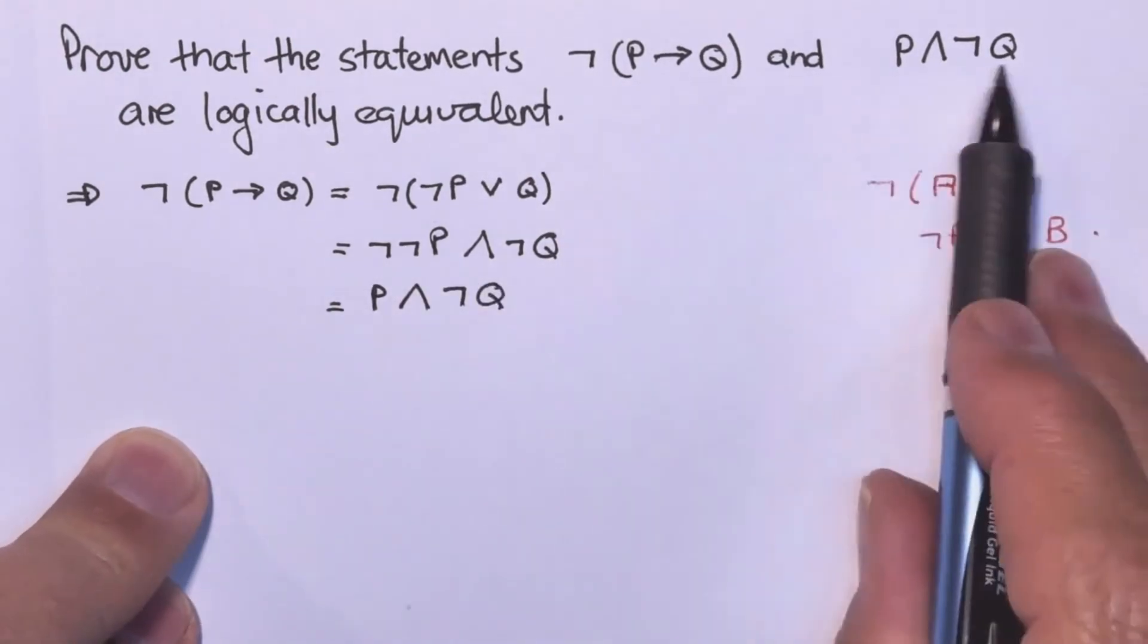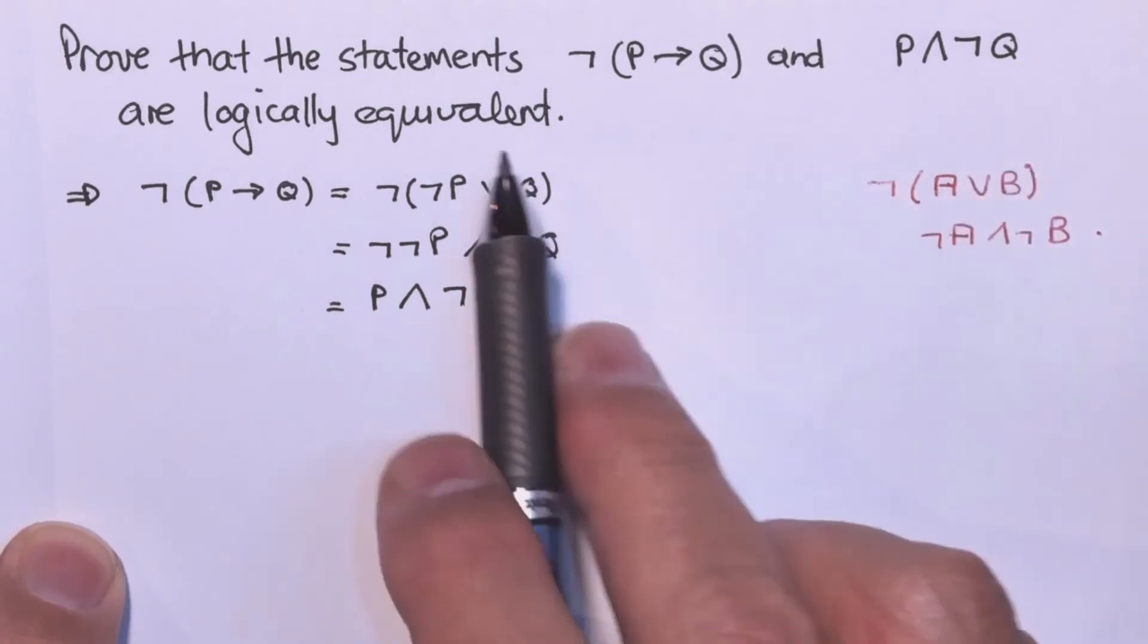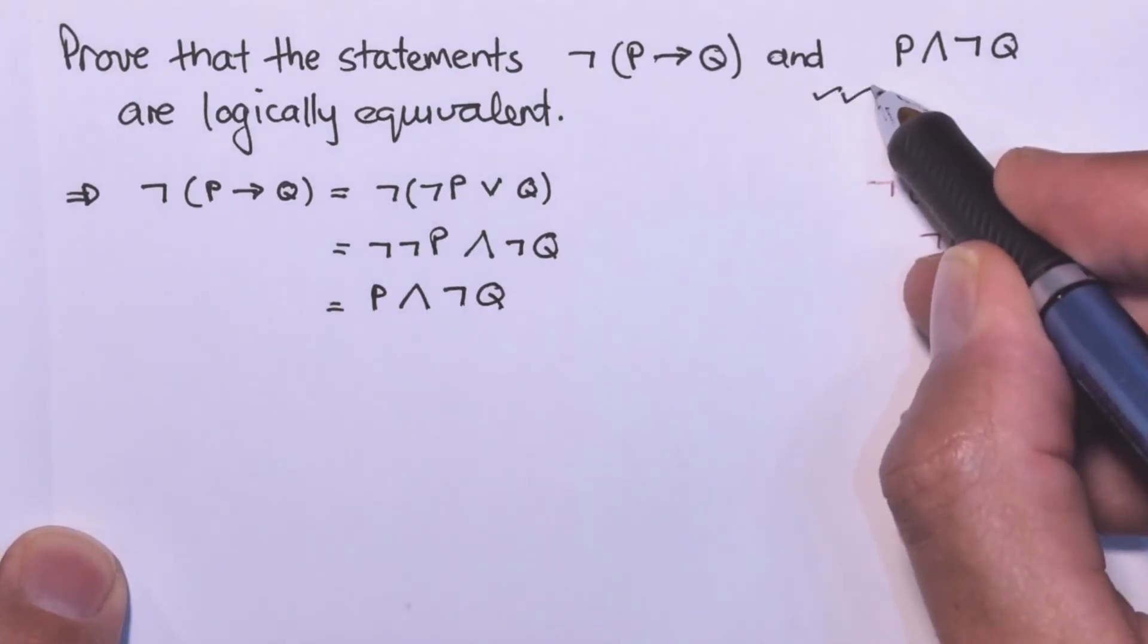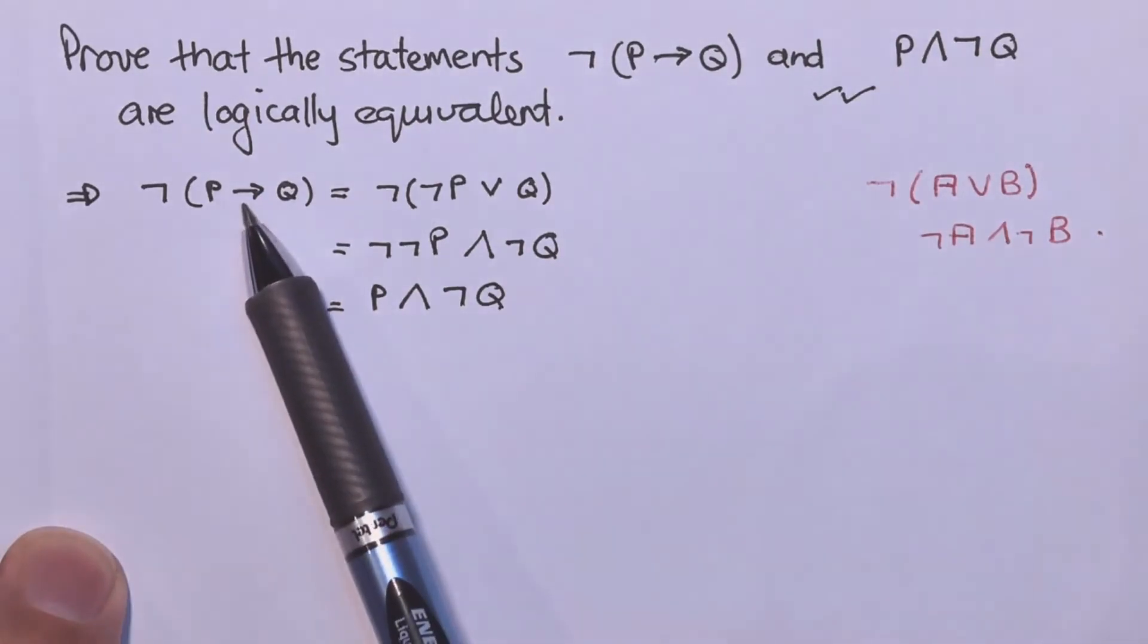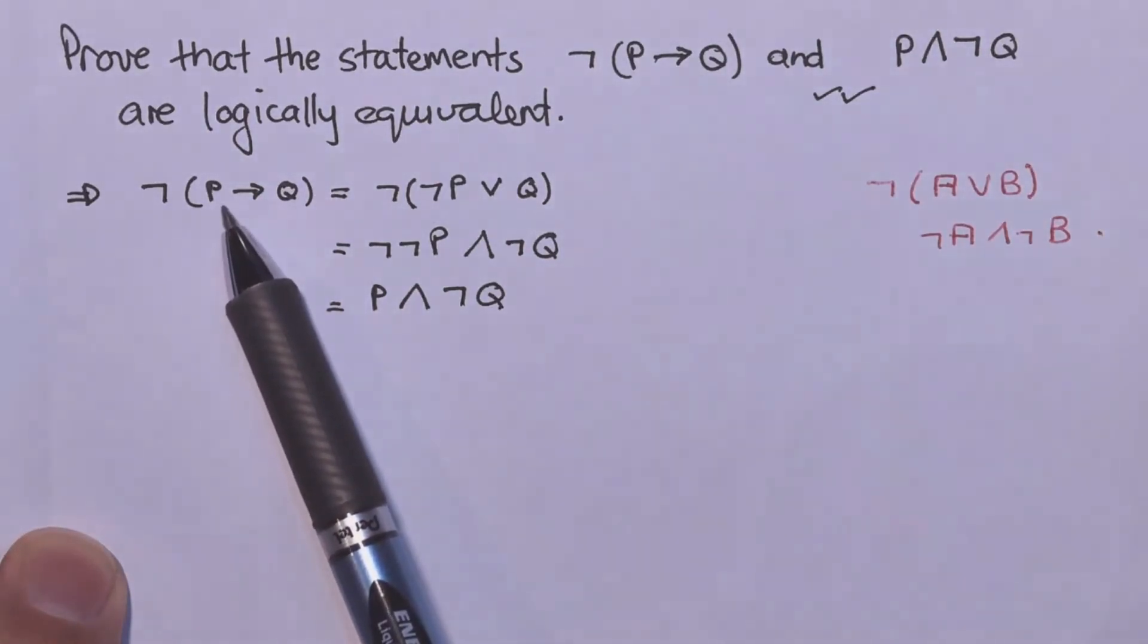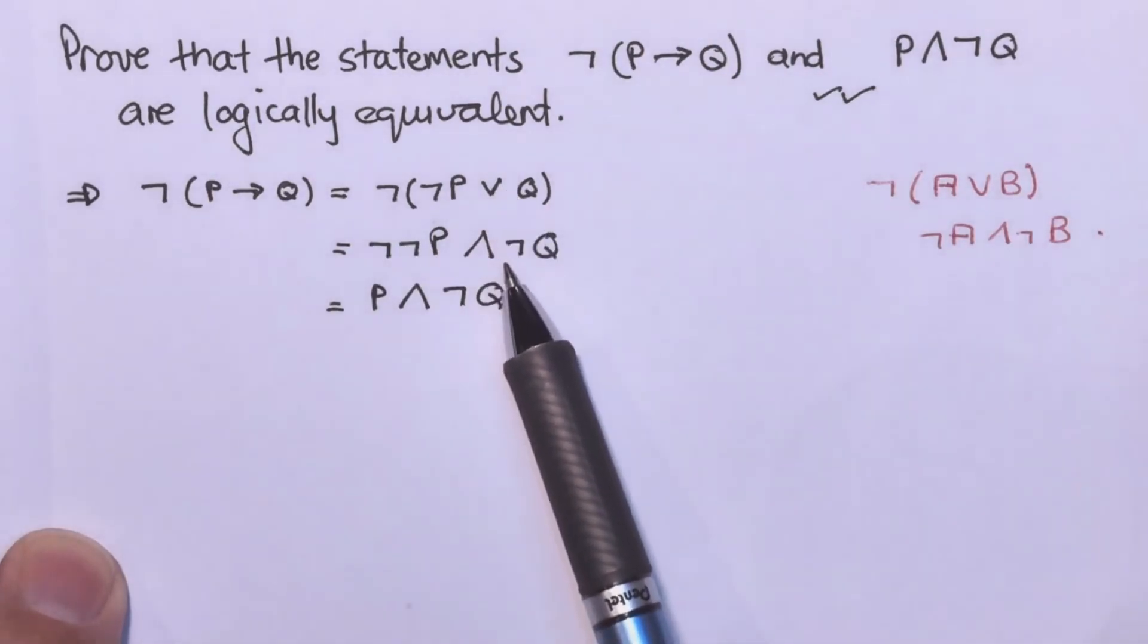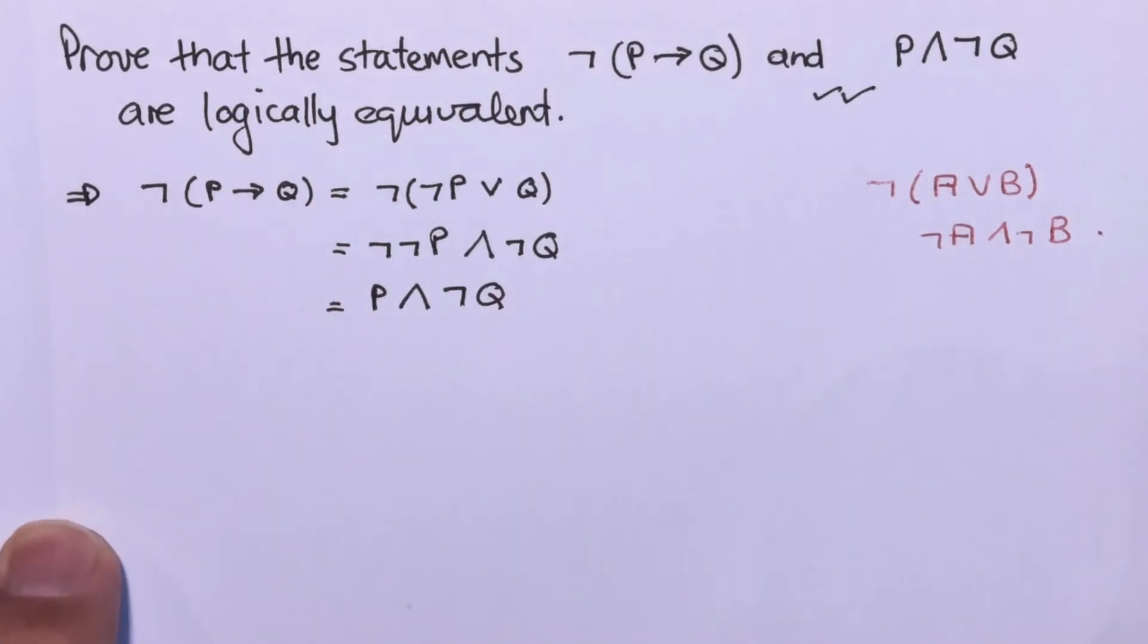And that's exactly where we want it to go. So yes, finally this is true. These two statements are definitely logically equivalent. Remember what we did? We changed the implication here into a disjunction. From there we applied DeMorgan's law, we treated the double negation, got rid of it, and we showed that these two things are indeed logically equivalent.